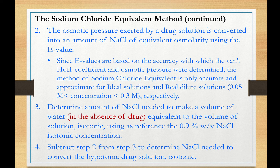In Step 2, we are going to use the E-value to calculate the amount of sodium chloride osmotically equivalent to the amount of drug present in the solution. In Step 2, we are determining the osmotic pressure exerted by the drug solution in the absence of sodium chloride.